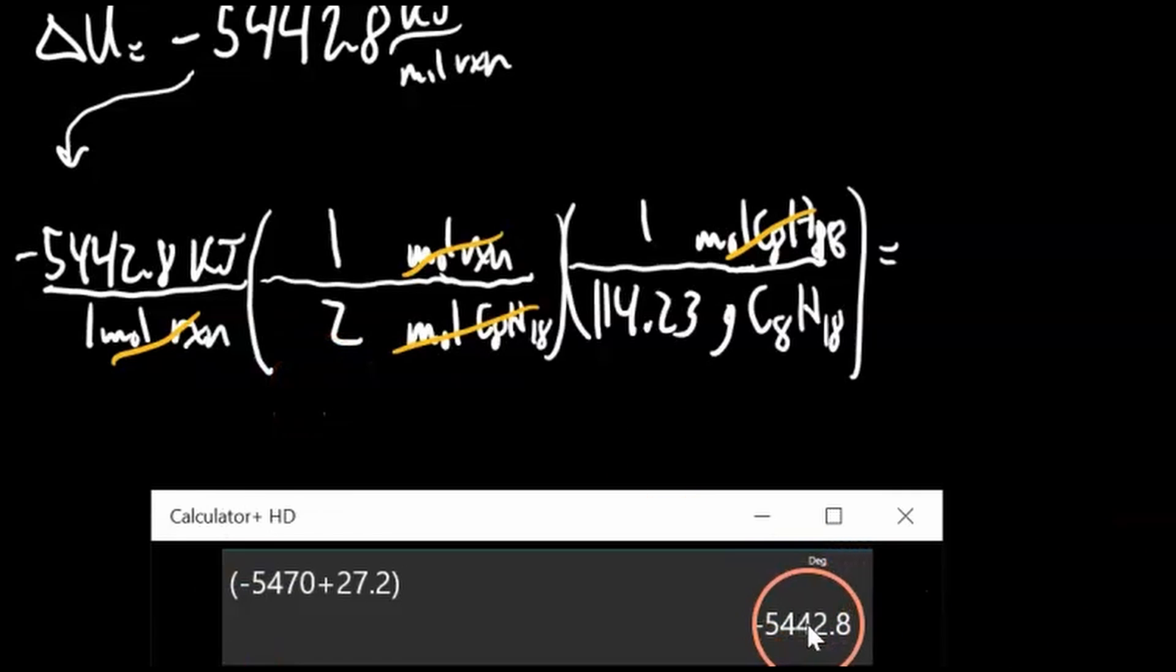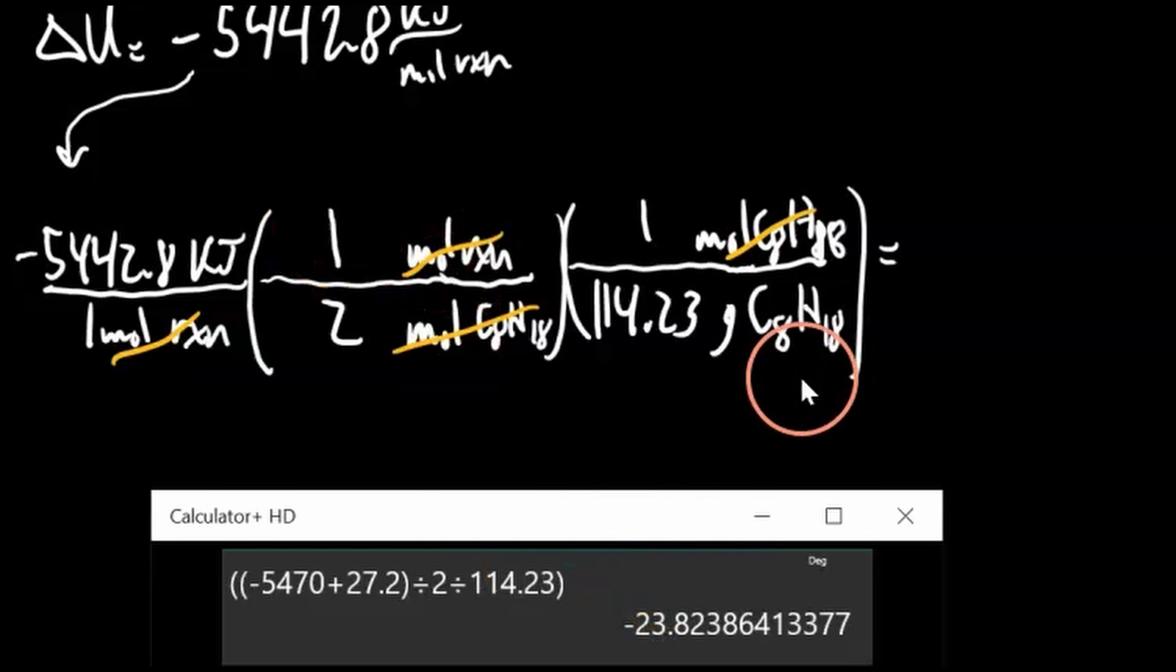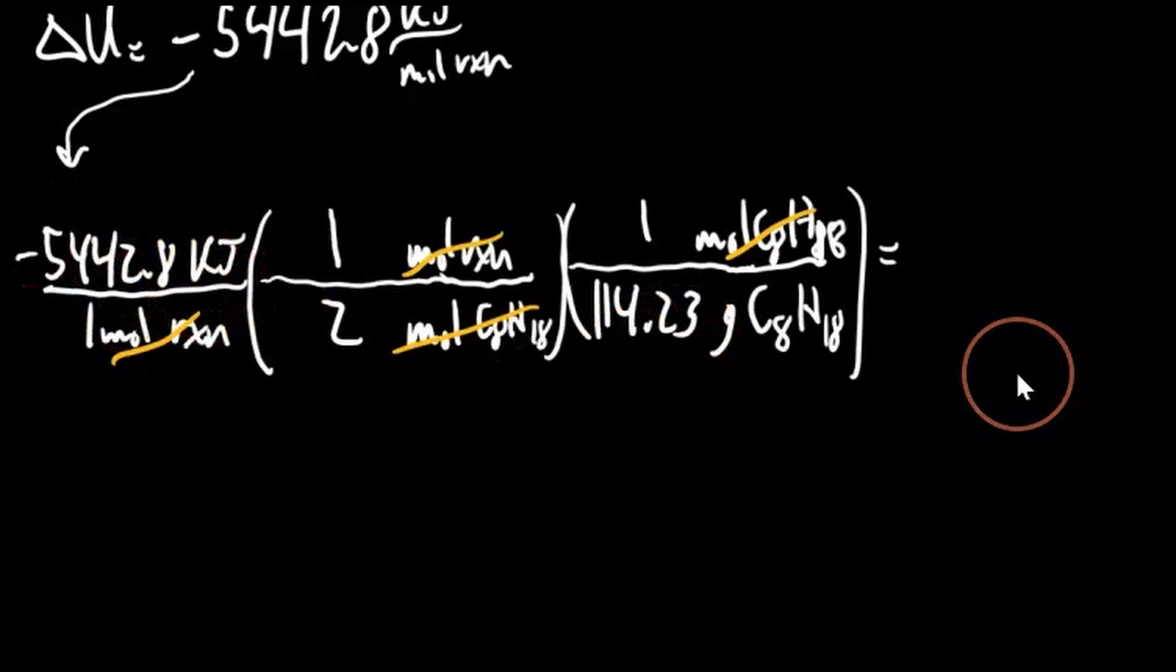I got this number right here already, so I'm going to keep that in my calculator. Divided by 2, divided by 114.23, and that is negative 23.8. Now we have three significant figures, so negative 23.8. This is significant to this decimal place, or place value: negative 23.8 kilojoules per gram.